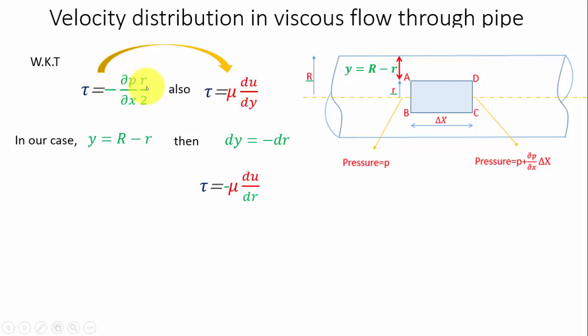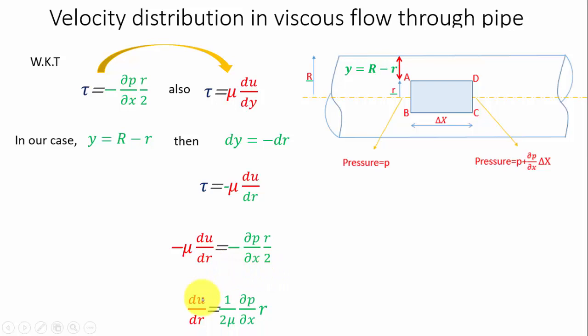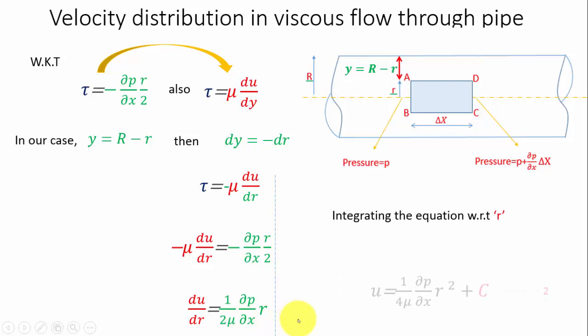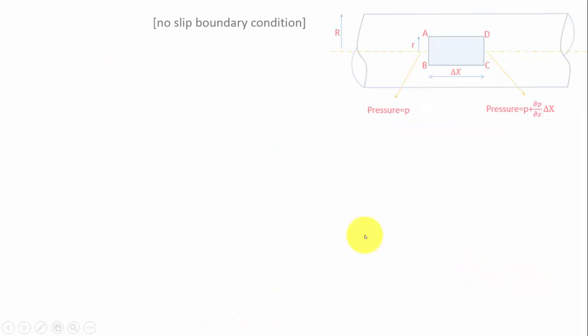Equating the two expressions, we get an equation for du/dr. Taking −μ to the right-hand side, the minus signs cancel. Integrating u with respect to r, r² becomes r²/2, and a constant of integration C appears. To find C, we apply the no-slip boundary condition: at the wall, velocity is zero. This means at small r = capital R, the velocity u = 0. Substituting into the integrated equation gives: 0 = (1/4μ)·(∂p/∂x)·R² + C, so C = −(1/4μ)·(∂p/∂x)·R².